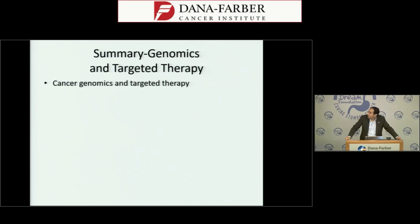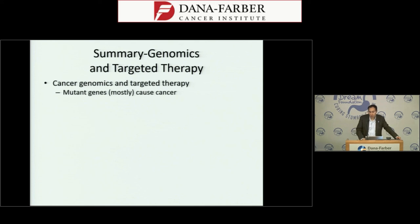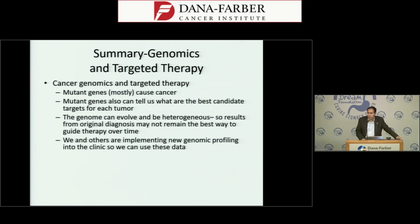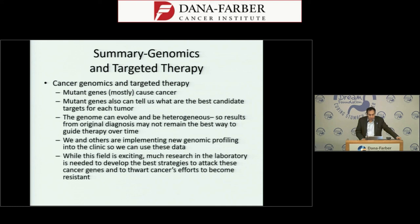In summary: mutant genes largely cause cancer and can increasingly tell us the best candidate targets for different tumors. We also recognize that the cancer genome can evolve and be heterogeneous — a tumor's profile at initial diagnosis may differ from a metastatic biopsy a year later. We and many others are working to use these data to guide new clinical trials, current therapy, and the science that will bring better therapies in the future. It's very exciting, but there's clearly much more work to do.